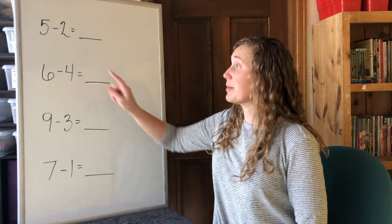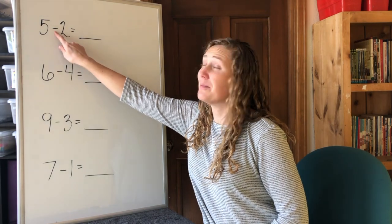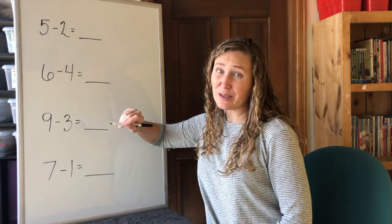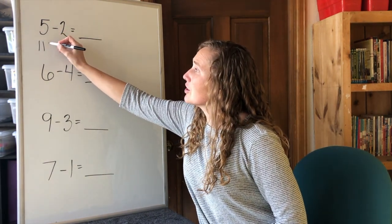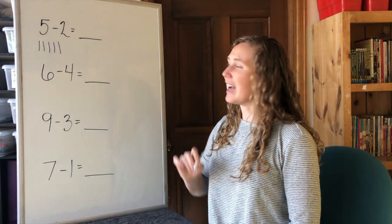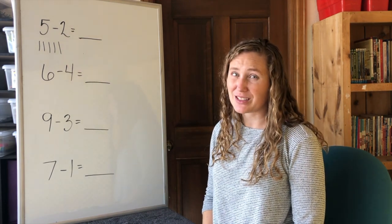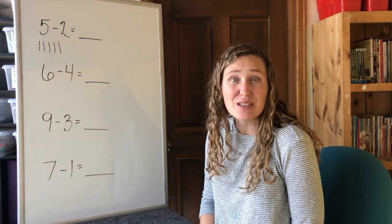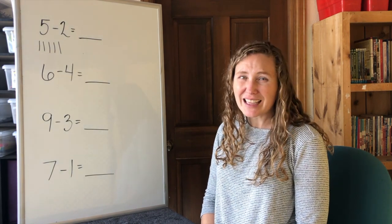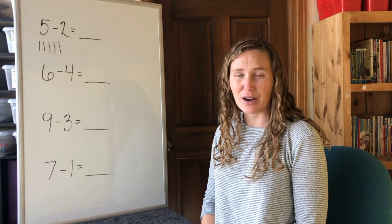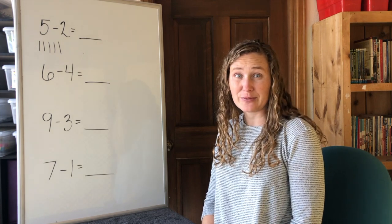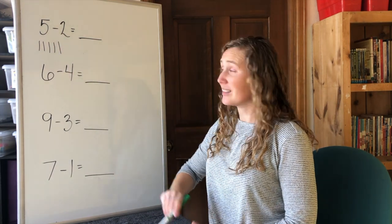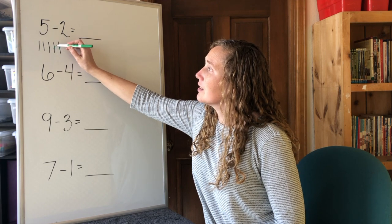Our first subtraction problem is five minus two. We can start with five tally marks. One, two, three, four, five. Five tally marks. How many tally marks are we taking away, minusing, subtracting? Those all mean the same thing. How many less tally marks should we have in our answer? We start with five, then we take away two of them. Let's cross out two. One, two. We took away two tally marks.